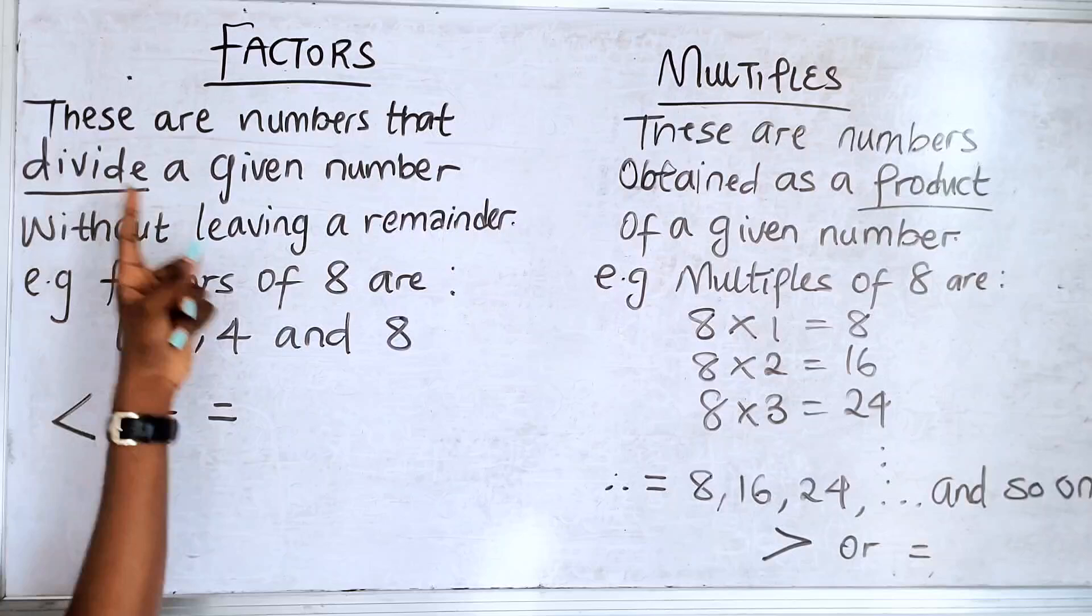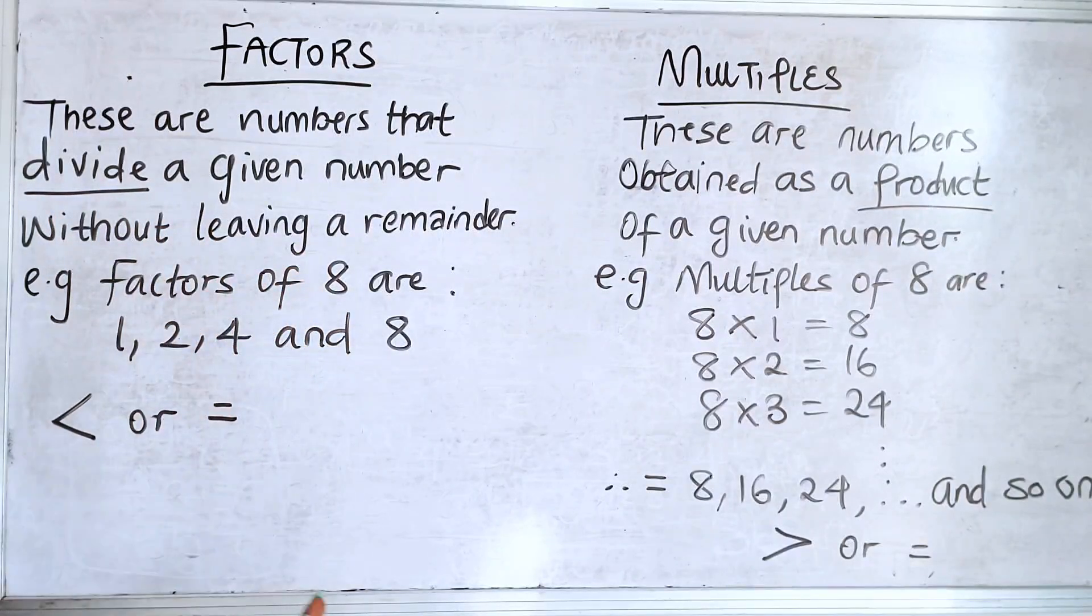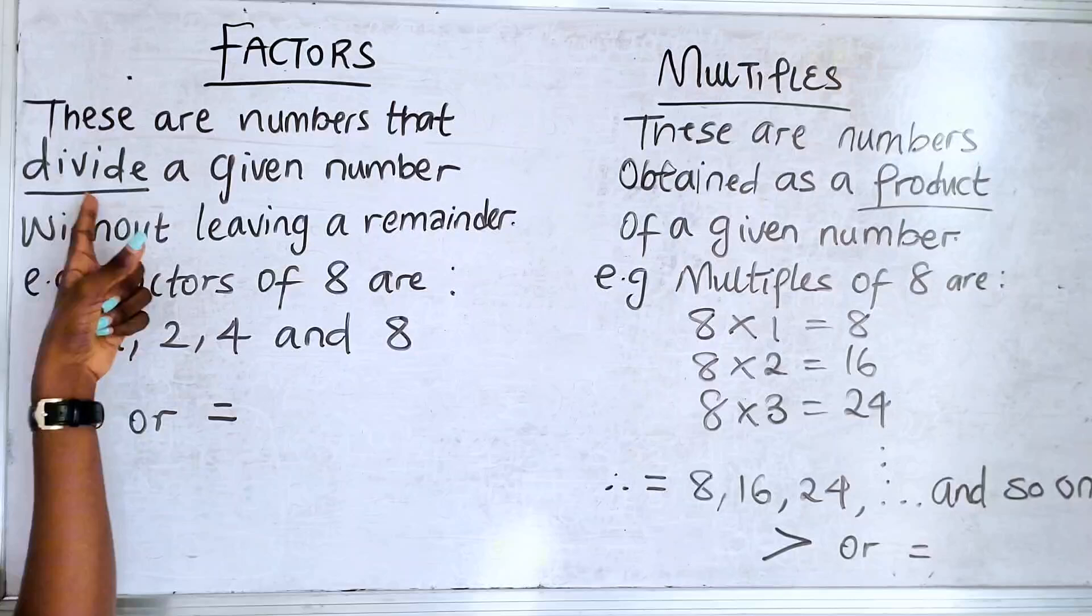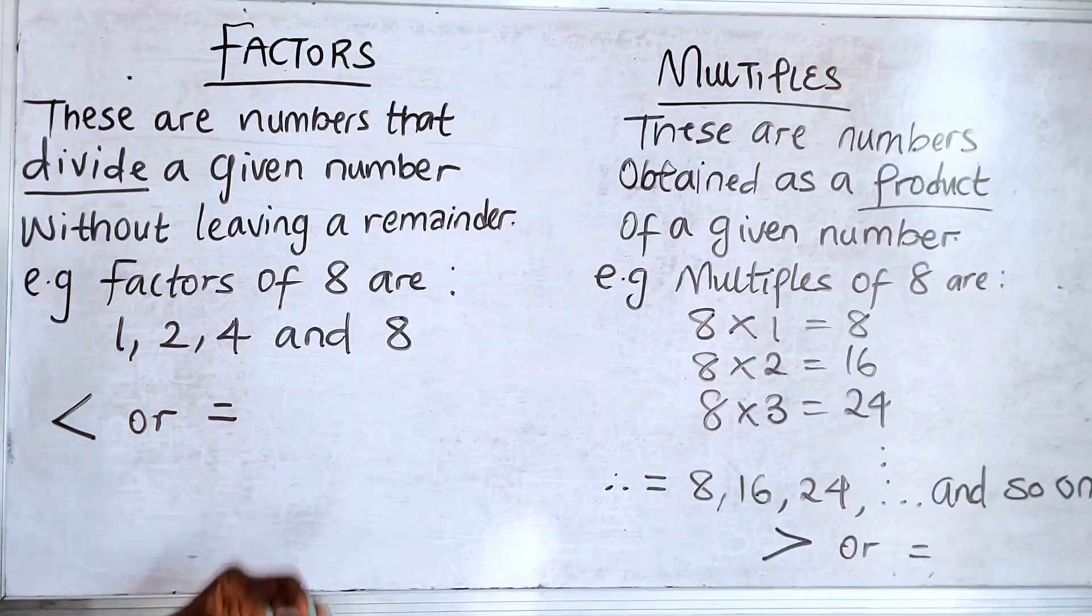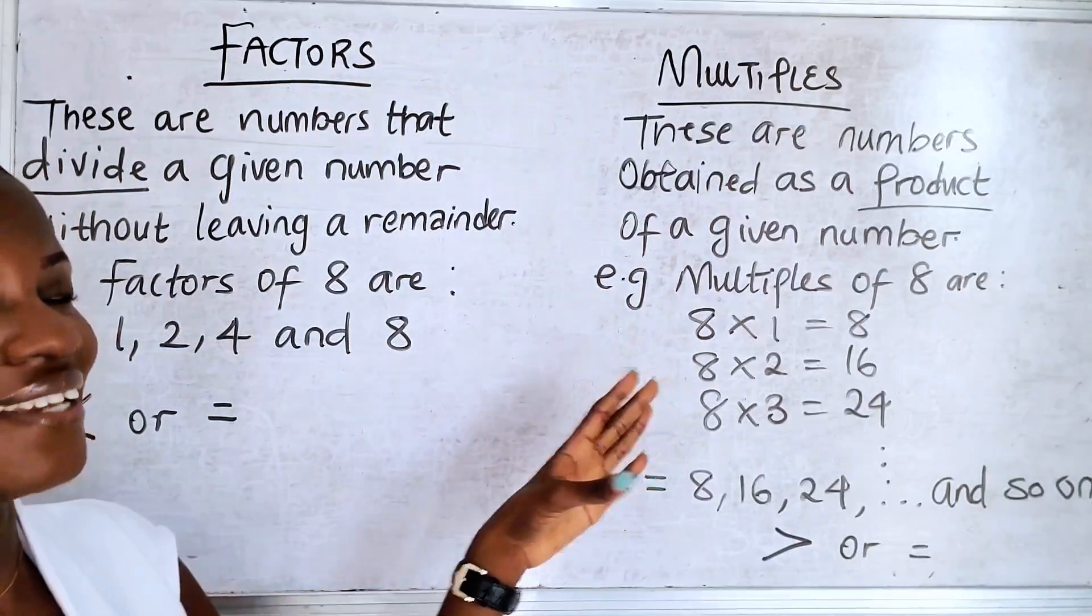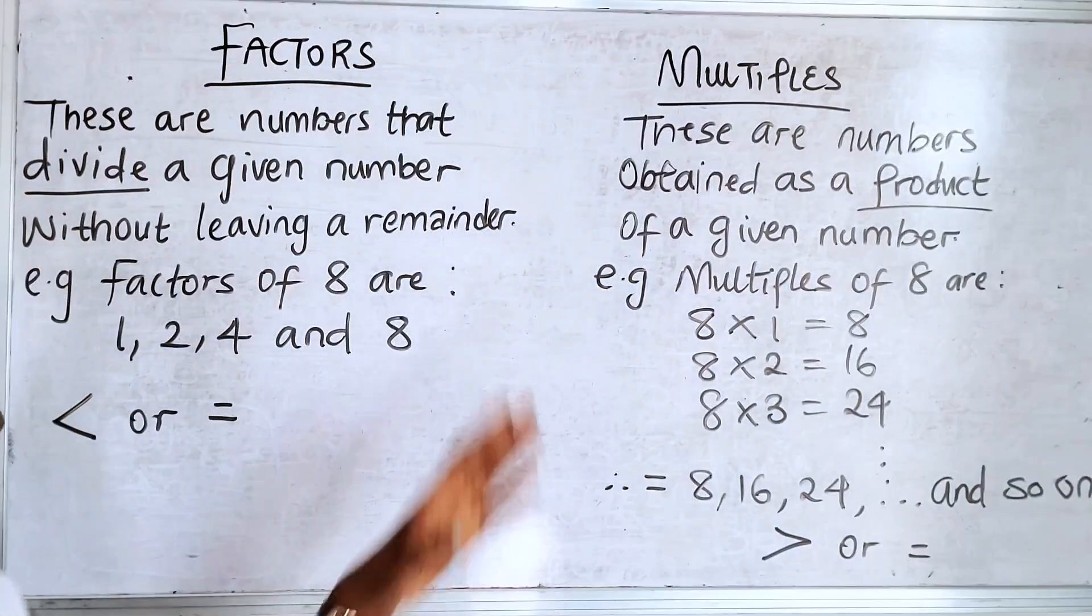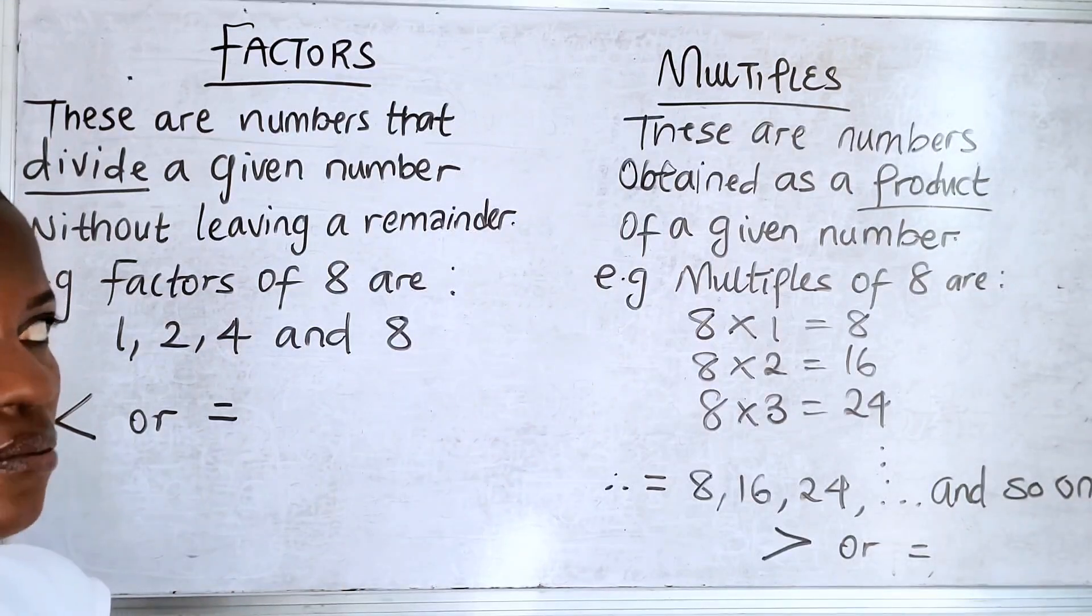Now, factors - these are numbers that divide a given number without a remainder. I want you to take note of the word divide. So when you're dealing with factors, you have to know your division. Multiples - these are numbers obtained as a product of a given number. So when you're talking about multiples, you have to know your multiplication table.